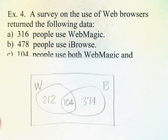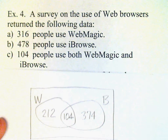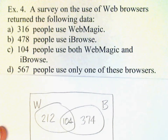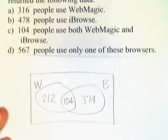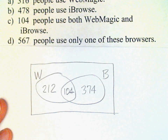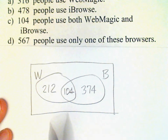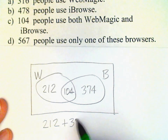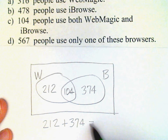Now let's look at the claim in part D — it says 567 people use only one of these browsers. But what does our diagram tell us? People who use only WebMagic number 212, and people who use only Eyebrows number 374. When we add those up, we get 586.